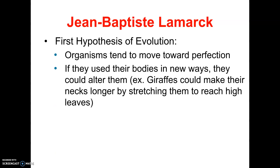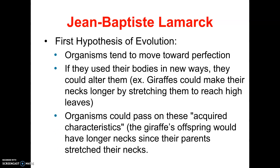Lamarck said things like giraffes could make their necks longer by stretching them. If leaves on trees became scarce, giraffes could stretch their necks and the more they stretched, the longer they would get. And here's where it really falls apart: he said organisms could pass these acquired characteristics to their offspring. So because giraffes stretched their necks, their babies would have longer necks — like saying because I work out, my babies will come out buff, or because I lost three fingers in an accident, my babies will be born missing three fingers. We know today, because of genetics, that organisms do not pass on acquired characteristics. They only pass on genetic traits.